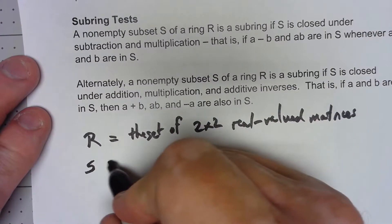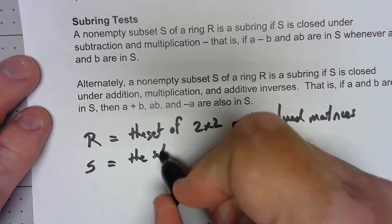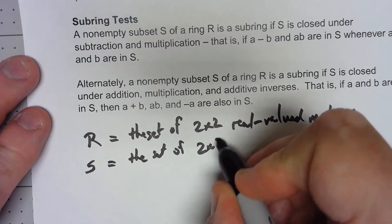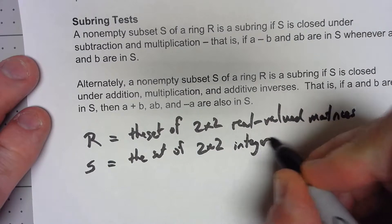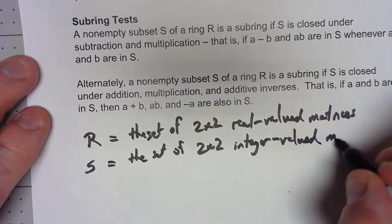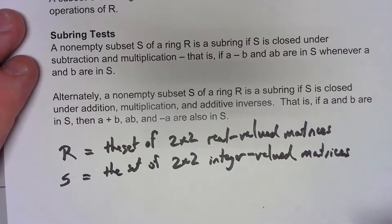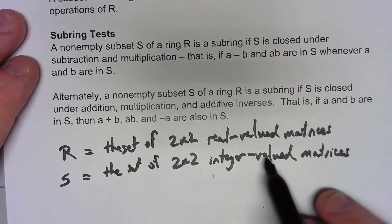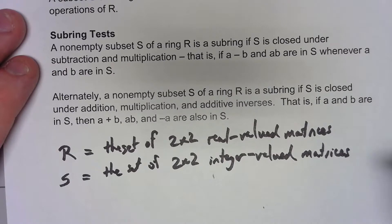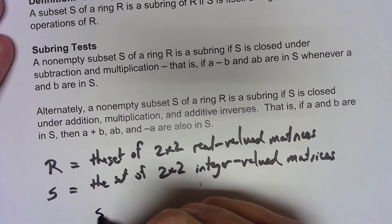So I'm going to look at the subset, which is the set of 2x2 integer-valued matrices. I'm going to do this using this two-step way because if I subtract two matrices that are integer-valued, I'm going to get an integer-valued matrix. If I multiply two matrices that are integer-valued, I get an integer-valued matrix. So there we go. S is a subring.